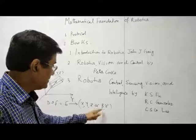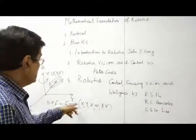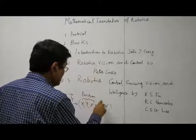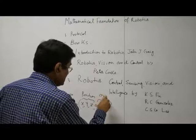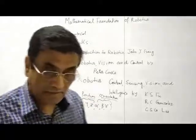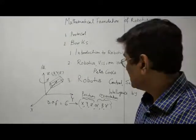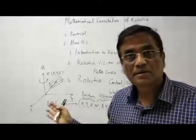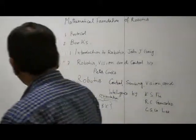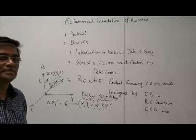So alpha is angle with x-axis, beta is angle with y-axis, and gamma is angle with z-axis. This is called the position of the object, and this is called the orientation. So this is unique for a rigid body — it has both position and orientation. A point, on the other hand, has only position and no orientation. So a point has 3 degrees of freedom, but the moment I am talking about a 3D object, it has 6 degrees of freedom.